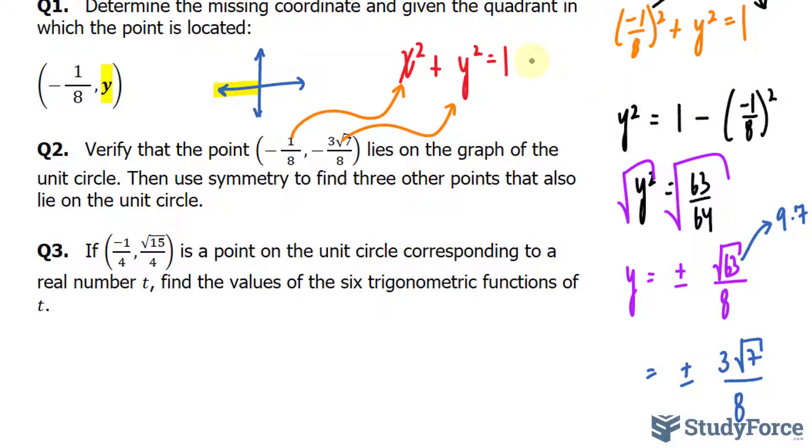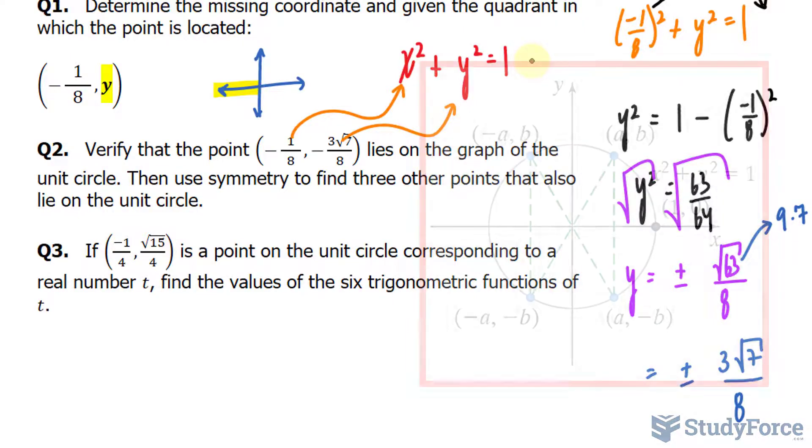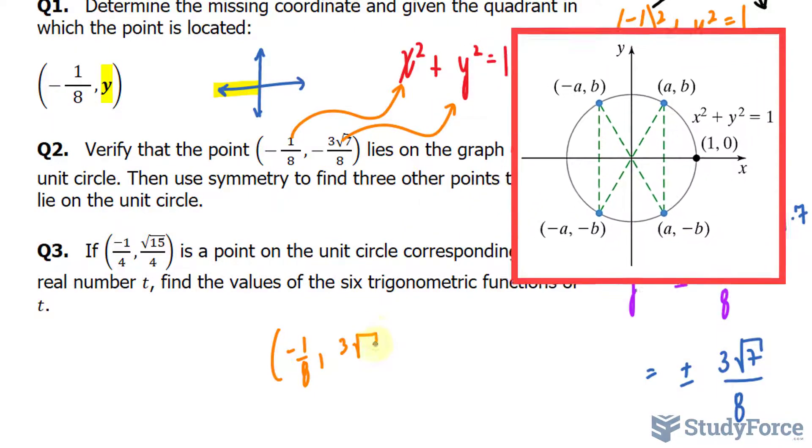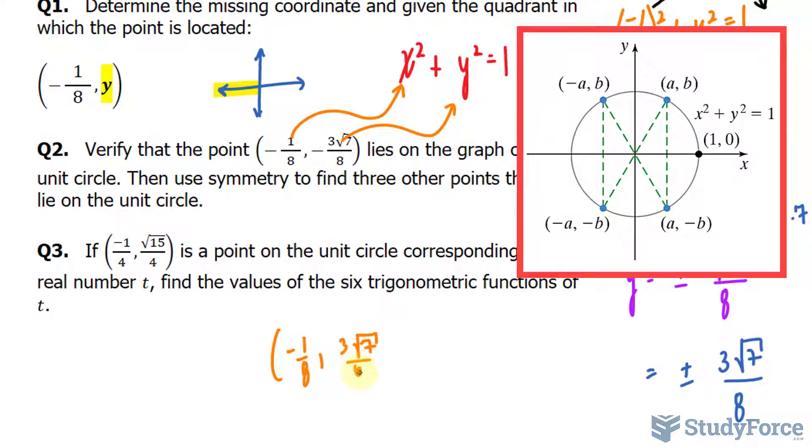One thing that you should remember when it comes to the unit circle is that for any point A, B, let's say, symmetry can be used to locate three more points. So we already know one of the points. Using the schematic that you see on your right, we can say that a second point will be negative 1 over 8 and positive 3 times the square root of 7 over 8.